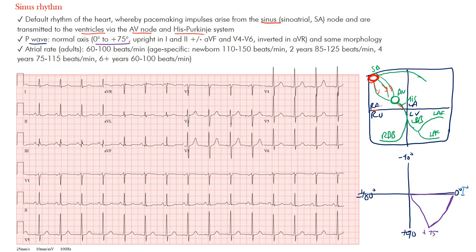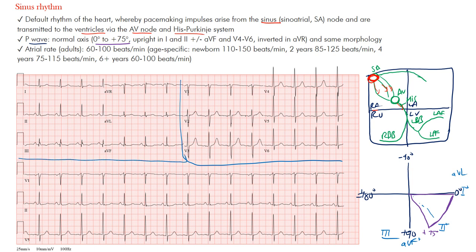What leads actually sit there? Lead one sits at zero degrees — that's the positive end of lead one. This is AVF, the positive end. Lead two sits at positive 60 degrees. You have AVL here — that's the frontal plane, meaning up and down. Then you have the horizontal plane, which are the precordial leads: V4, V5, and V6. If the impulse is heading towards those leads — the positive end of those leads — you'll see upright P waves. When identifying sinus rhythm, we're essentially looking at the P waves. Whether it's sinus bradycardia, normal sinus rhythm, or sinus tachycardia, that's based on the rate.